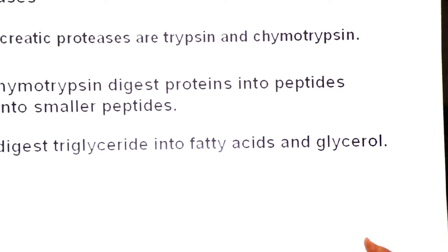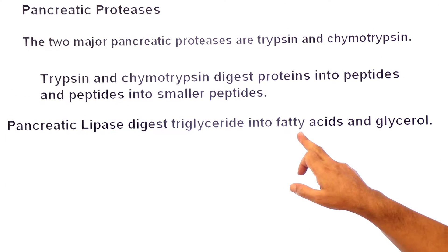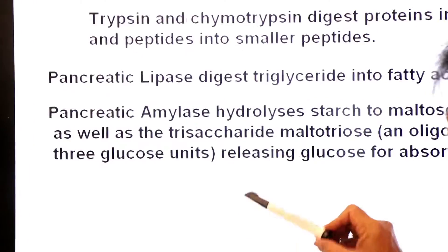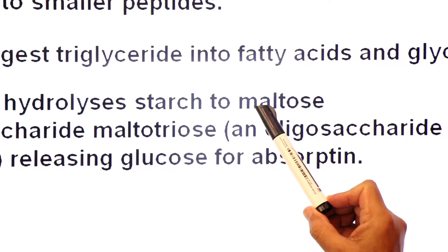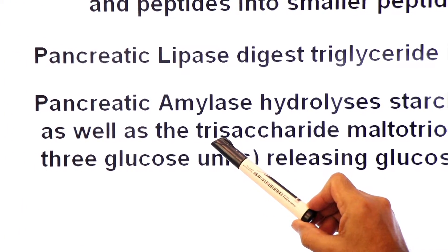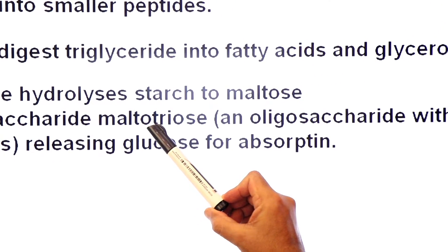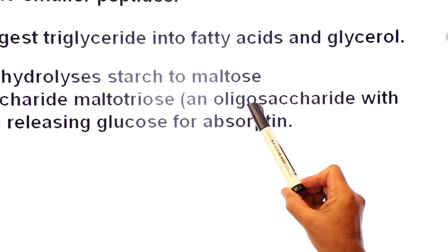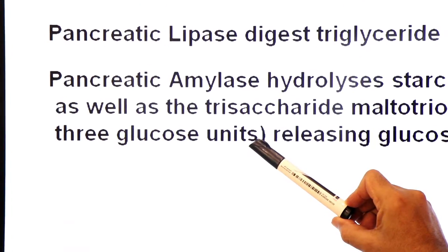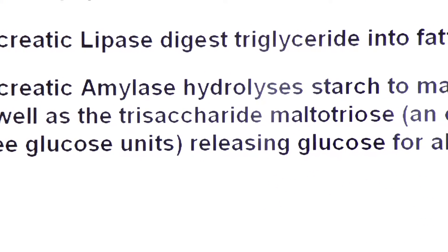Fatty acids and glycerol are the final end products of fat digestion. And pancreatic amylase hydrolyzes starch to maltose. Maltose is a disaccharide. Amylase also breaks down the trisaccharide maltotriose. It is made up of three glucose units — an oligosaccharide with three glucose units. Jab yeh maltotriose break hoga, toh glucose release kar diya jayega, releasing glucose for absorption.